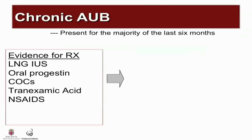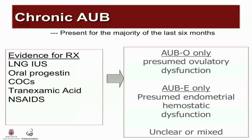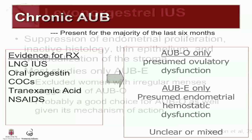We're going to focus on the evidence for treatment behind the levonorgestrel intrauterine system, oral progestins, combined oral contraceptives, tranexamic acid, and non-steroidal anti-inflammatories. In the top right-hand corner of each of the slides, I've noted whether the research pertains to AUB-O only — presumed ovulatory dysfunction — AUB-E only — presumed endometrial dysfunction — or unclear or mixed, because the focus of this talk is on AUB-O and AUB-E.